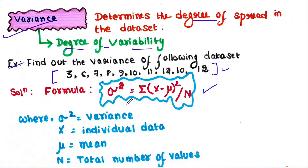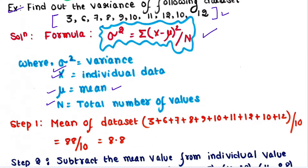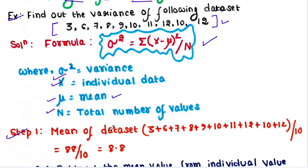The formula to find variance is: sigma squared equals the summation of (x minus mu) whole squared, divided by capital N. Here sigma squared is the variance, x is the individual data value, mu is the mean of all the data, and capital N is the total number of values in the data set.